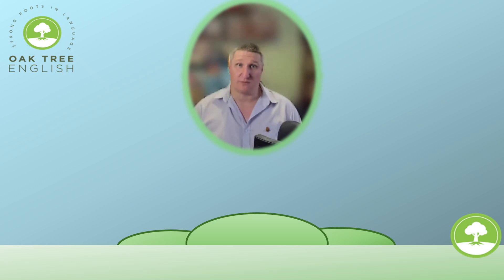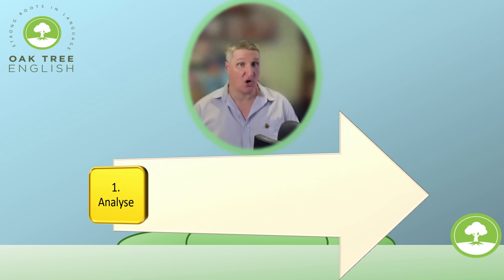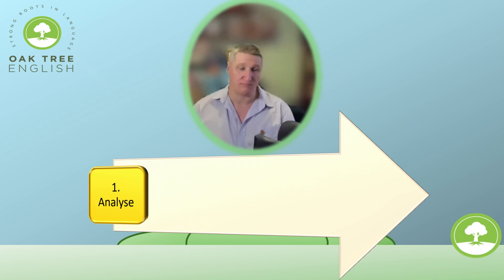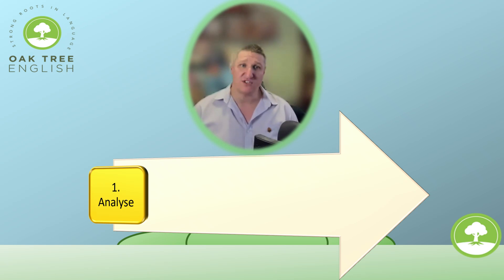When you get your paper, the first thing you should do is analyse the question. Try and work out what the question is asking and what sort of answer you should give — is it a name, a number, a date, an action? Find the gist question, that is, the question about the main meaning.